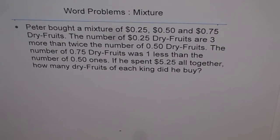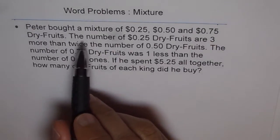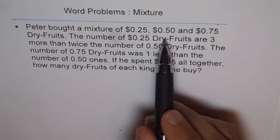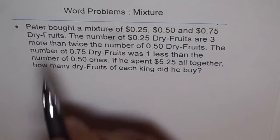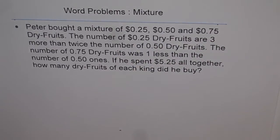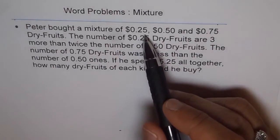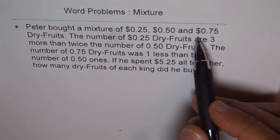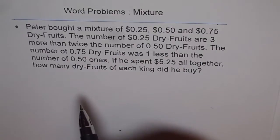Let's understand how to solve problems involving mixtures. Peter bought a mixture of $0.25, $0.50, and $0.75 dry fruits. That means there are three different types of mixtures: one costing 25 cents, another 50 cents, and the third one 75 cents.